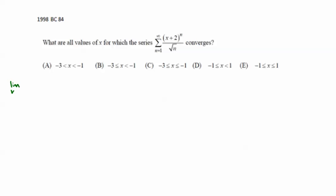Limit as n approaches infinity, absolute value of the n plus first term, so (x+2)^(n+1) over square root of (n+1), times the reciprocal of the nth term, square root of n over (x+2)^n, absolute value of that.